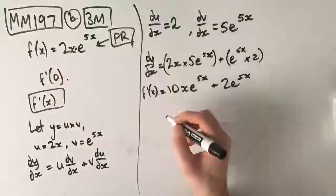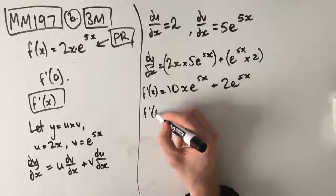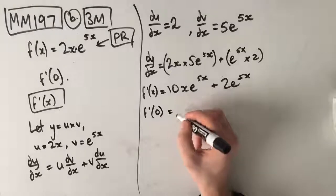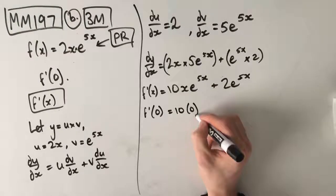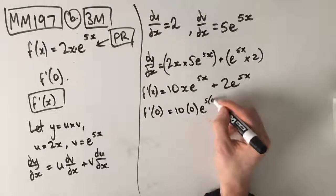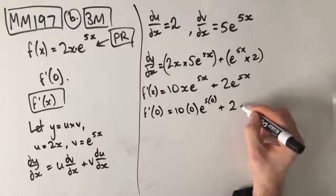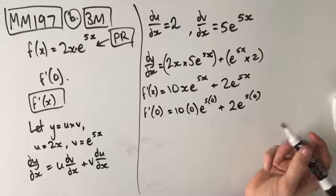So, from here, we know we need to find f dash of 0. So, what we're going to do is we're going to sub in 0 for all of our values for x here. So, we get 10 times 0 e to the 5 times 0 plus 2 e to the 5 times 0.